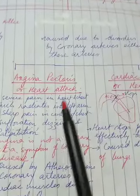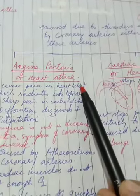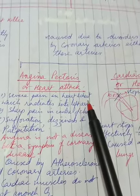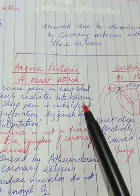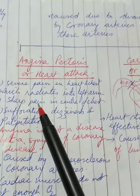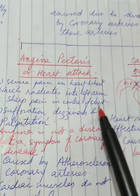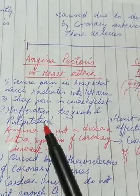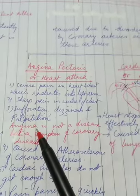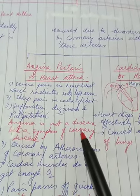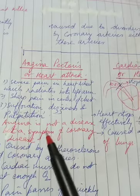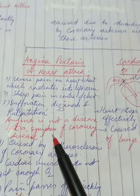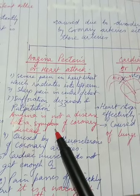So under this we will talk further about three things. First is angina pectoris or heart block. Now angina pectoris basically means it's a severe pain in the heart and chest that radiates into the left arm. This pain is very sharp in the center of the chest and it is accompanied by a feeling of suffocation, dizziness and palpitation. Now it is noteworthy to discuss here that angina itself is not a disease but it's a symptom of a coronary disease. And this is a warning to seek medical treatment.